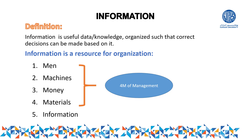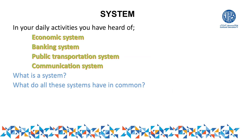The next component of accounting information system is the system itself. In daily life, you have heard of many systems: economic system, banking system, transportation system, communication system, educational system, health system, and so on. Two key questions arise: what is a system, and what do all systems have in common?